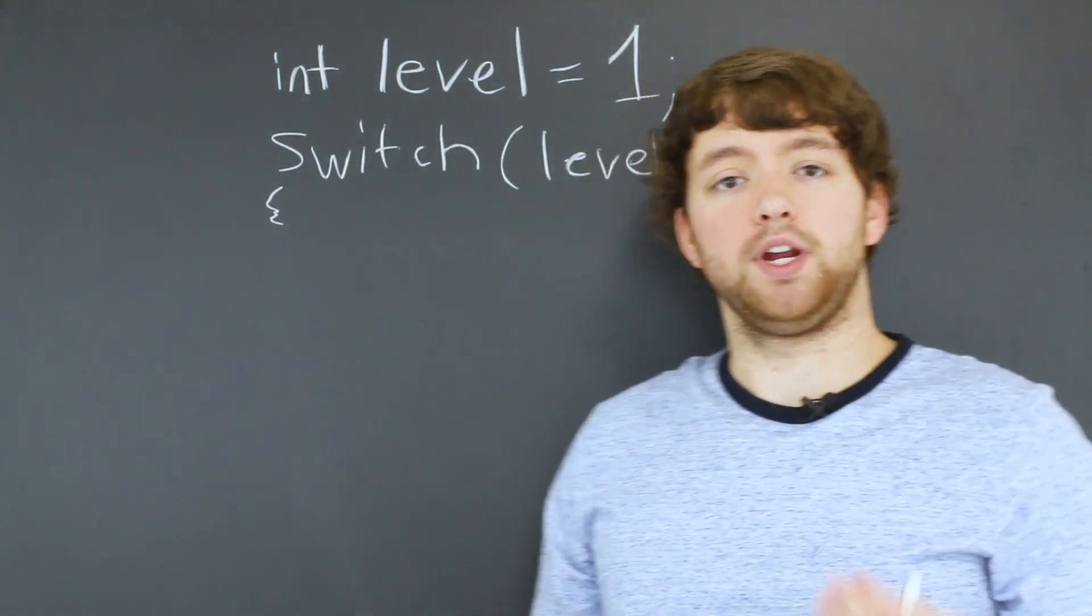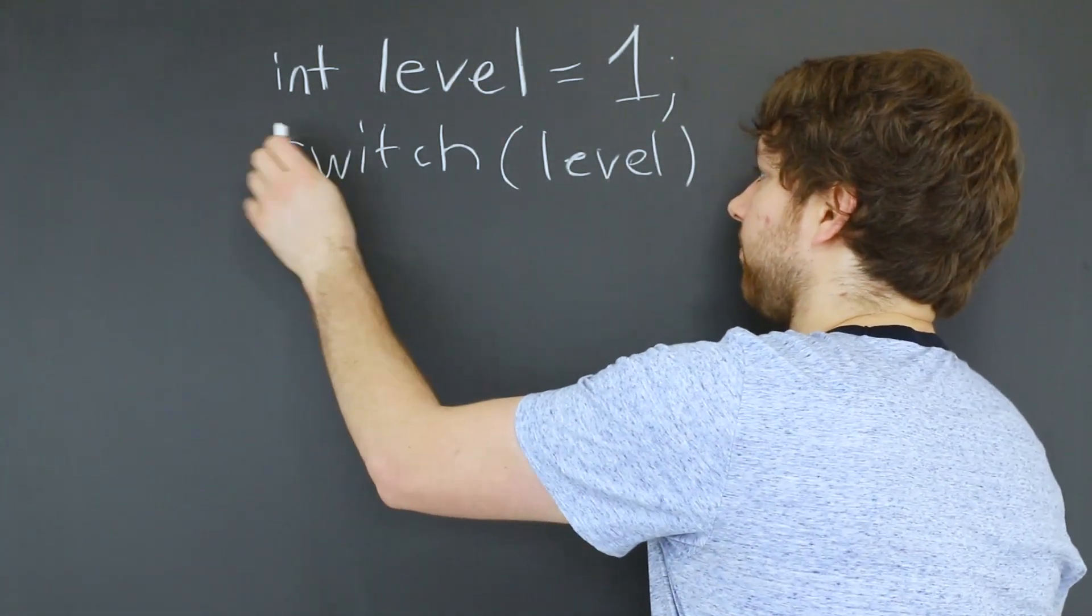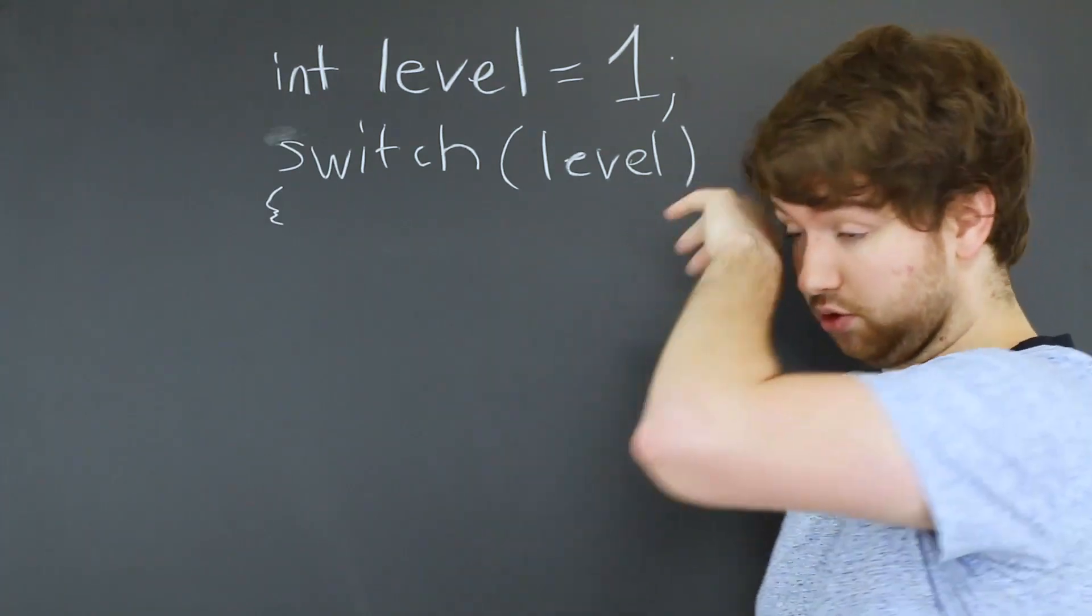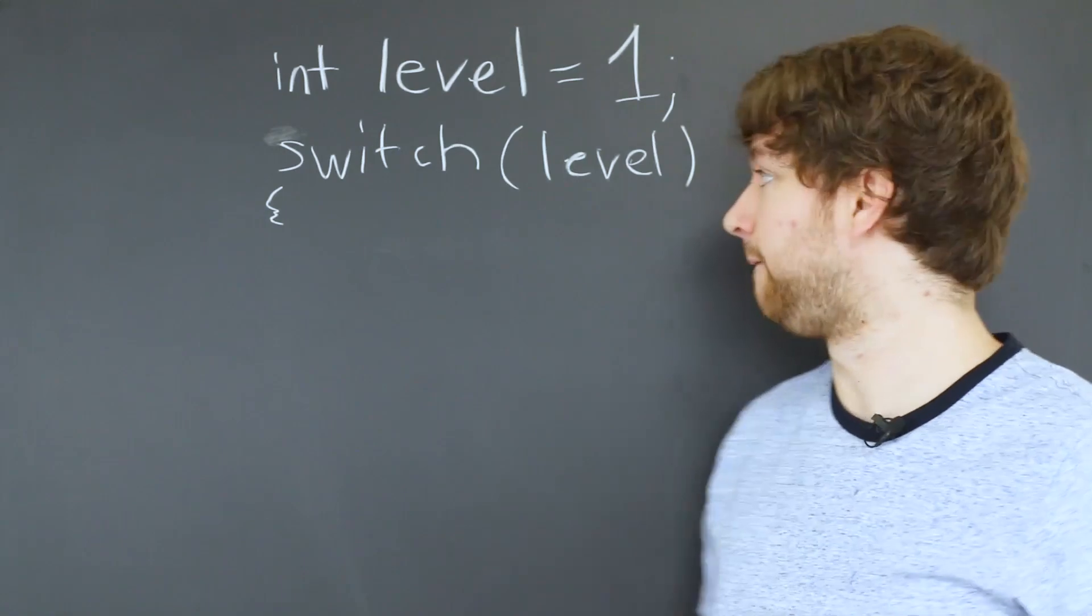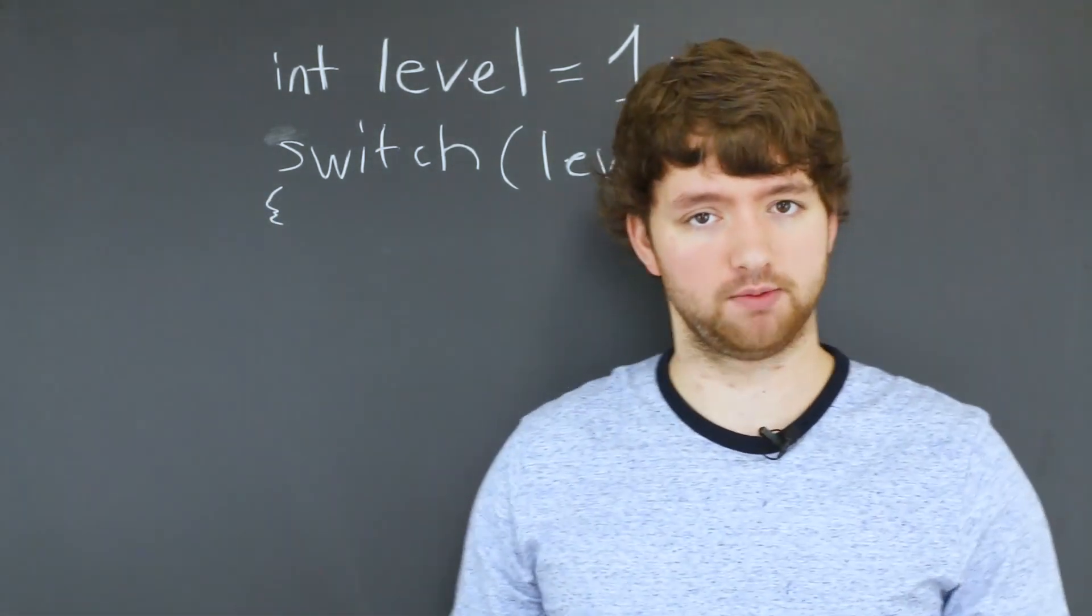And what we do is we create a switch statement by just saying switch. That's a lowercase s. And then in parentheses, we put that variable name that we're going to branch our program on. And then we put the curly braces similar to the body of an if statement.